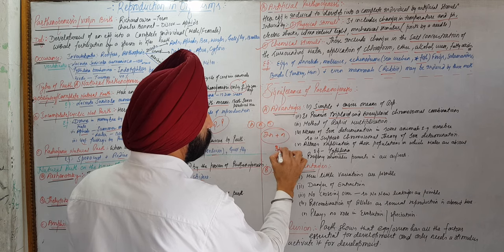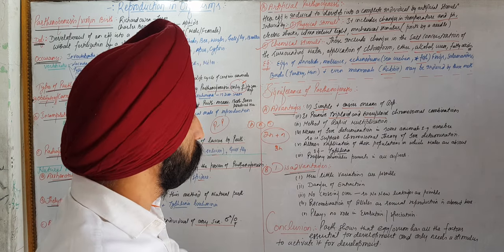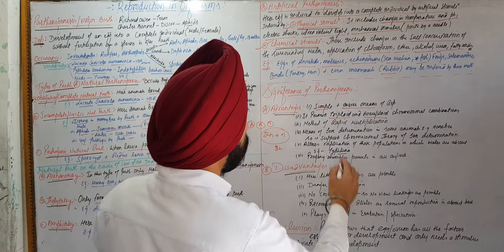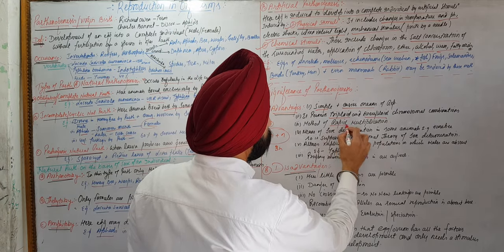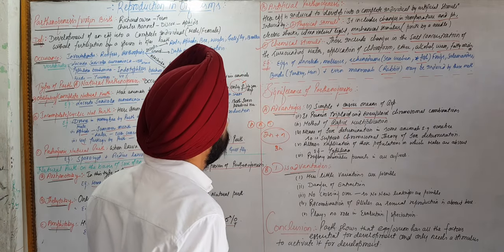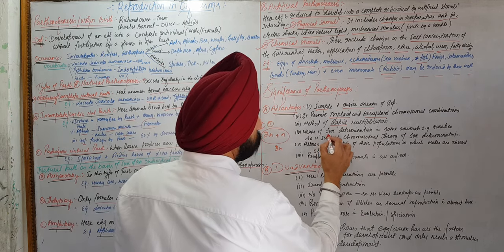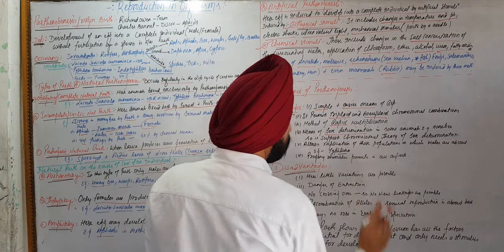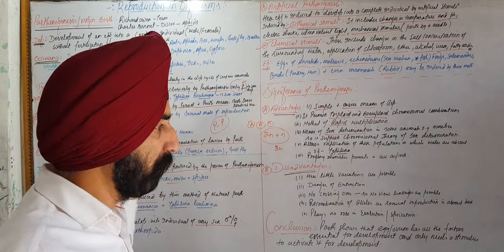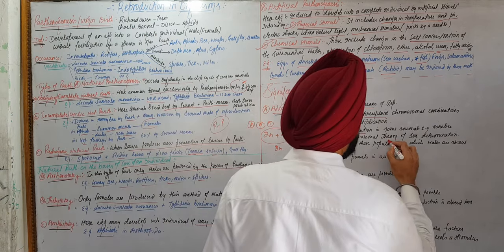Parthenogenesis is also used as a means of sex determination — determining whether males or females are produced. We have also talked about the theory of sex determination in relation to parthenogenesis.